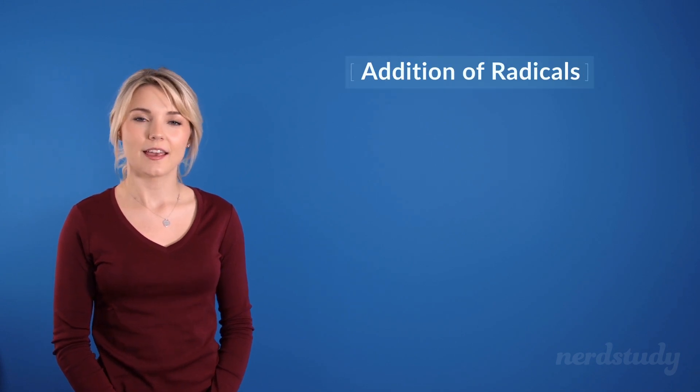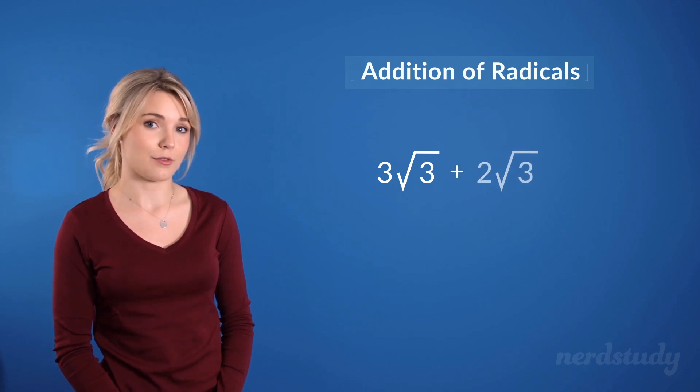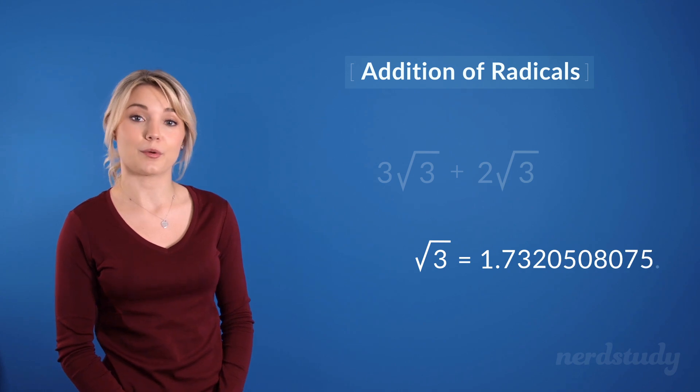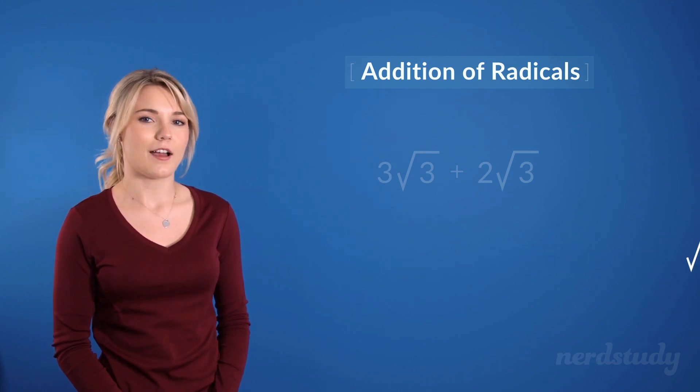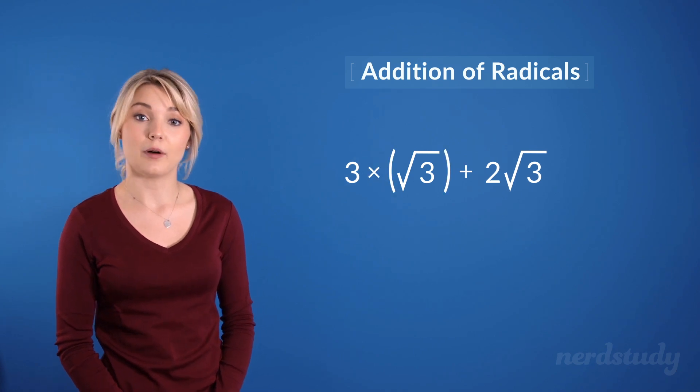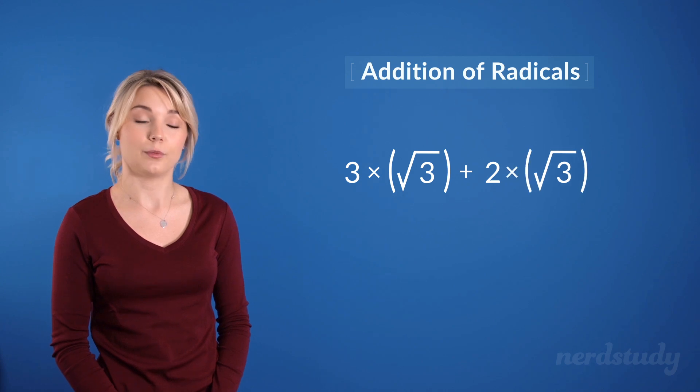So now let's move on to the addition of radicals. How would we solve 3 root 3 plus 2 root 3? Well we don't quite know exactly what the square root of 3 equals to but we do not need to here. This is because we know that 3 is being multiplied with root 3 and we know 2 is also being multiplied with the same root 3.